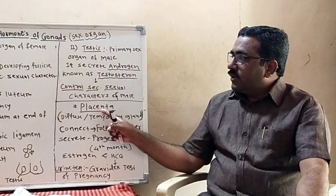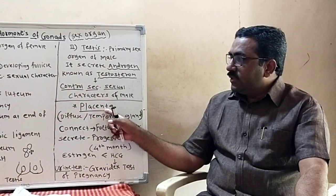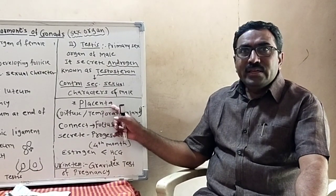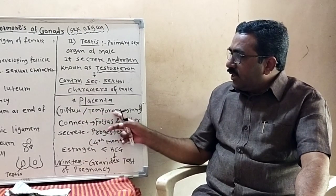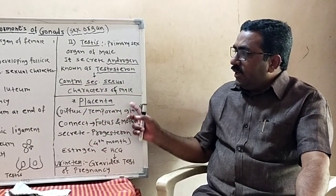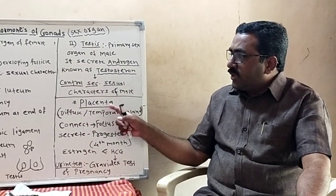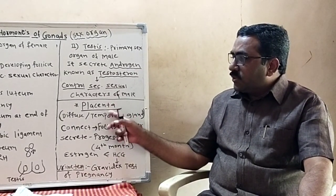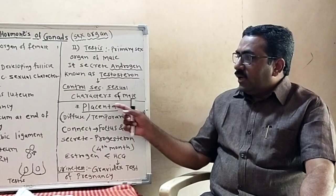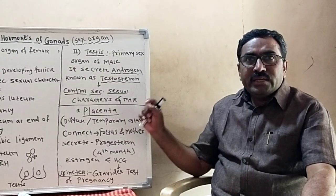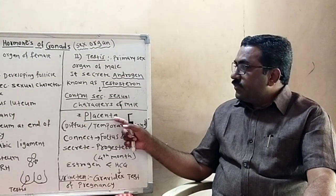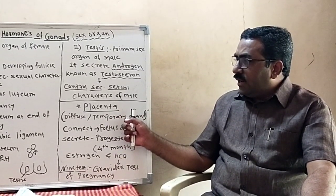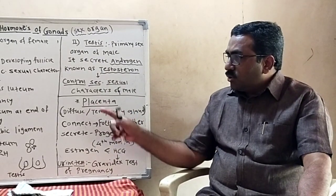The next part of control and coordination is the Placenta. Placenta is a diffuse or temporary endocrine gland. It is not permanently present in the body — it develops temporarily, which is why it is called a temporary endocrine gland. It is also called a diffuse gland.